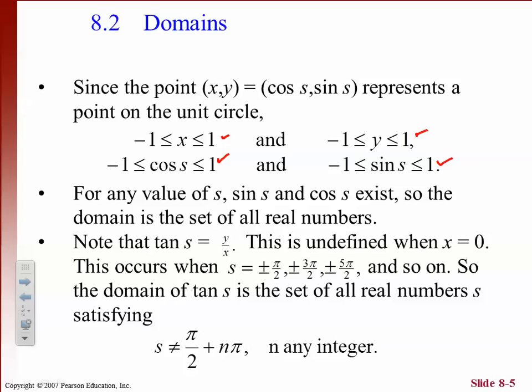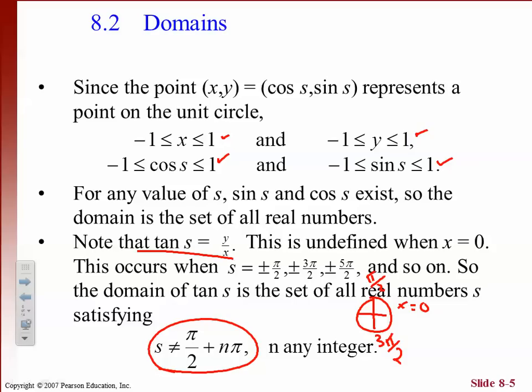Tangent is defined as y divided by x. Whenever x is 0, that function is going to be undefined. X is 0 at the top and bottom of the unit circle, where we have pi over 2 and 3 pi over 2. That's where the tangent is undefined, starting at pi over 2 and all the half-circle values of pi.